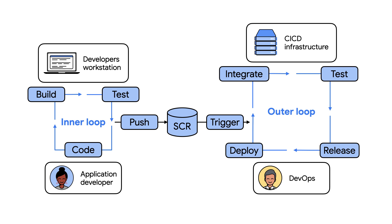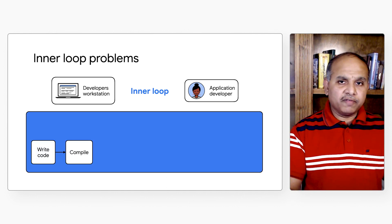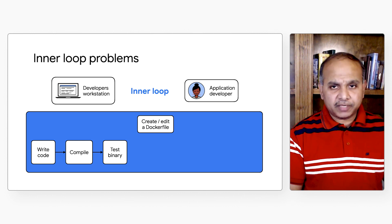Building containerized applications is still new to many enterprises, and we have seen two broad approaches teams tend to take. In the first case, enterprises don't even have developers use containers when developing on their workstations. They may deploy code and test it locally, but containers don't get built until you reach the outer loop. This leads to scenarios where development doesn't match production because it doesn't use Kubernetes. In the second case, enterprises may use containers in the inner loop with Docker, but it may be a slow and inefficient process.